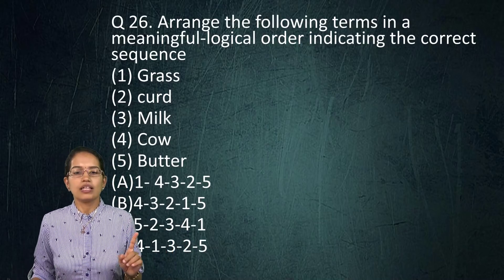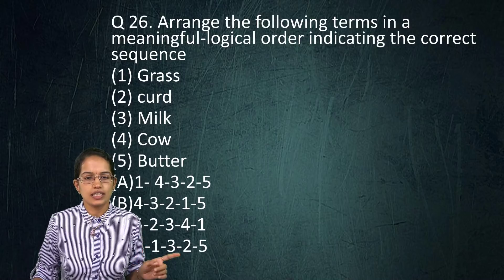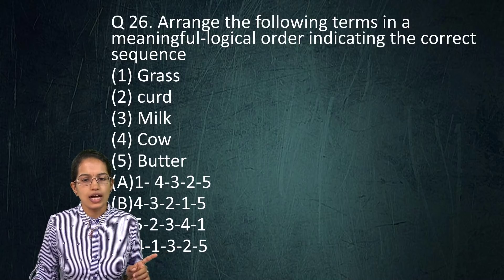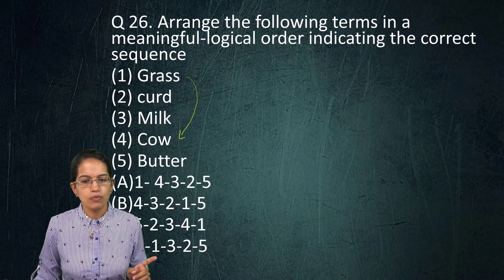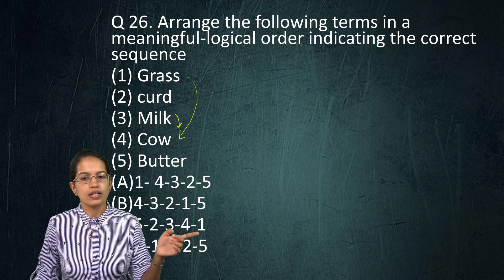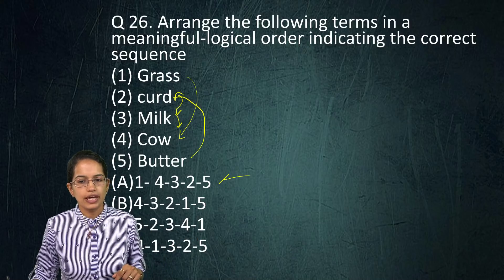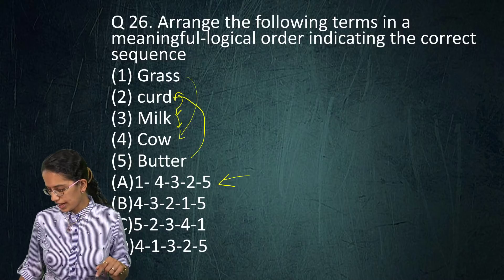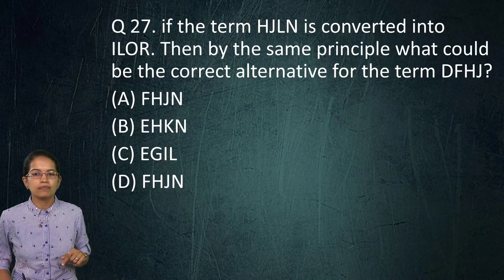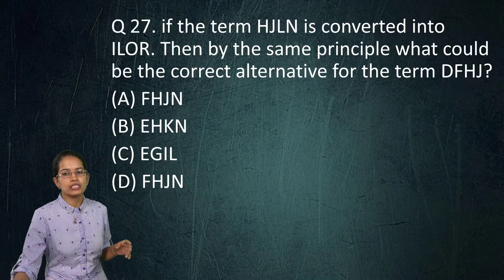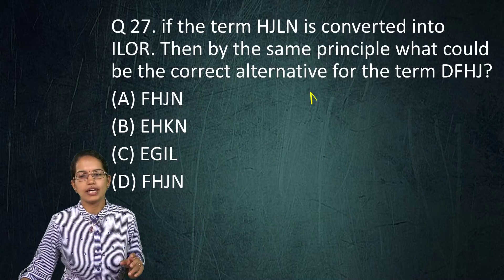The first question involves a sequence: grass is fed by cow, milk is obtained from cow, curd is produced from milk, and butter is produced from curd. So option A becomes your right sequence here.